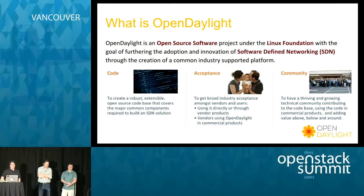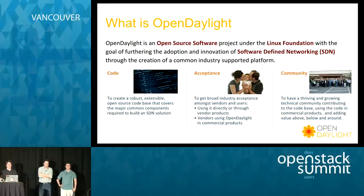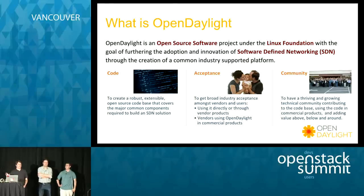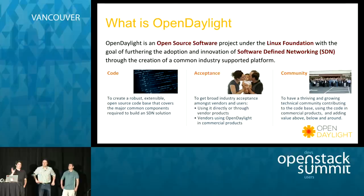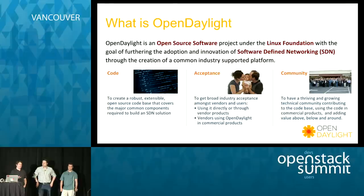Open Daylight is an open source software project under the Linux Foundation with the goal of furthering the adoption and innovation of software-defined networking through the creation of a common industry-supported platform. It's basically OpenStack, but solely focused on networking. We have three goals: we want to develop code — actually build an SDN controller that lets you do network virtualization, support OpenStack, enable software-defined WANs, do traffic optimization, whatever you can imagine.